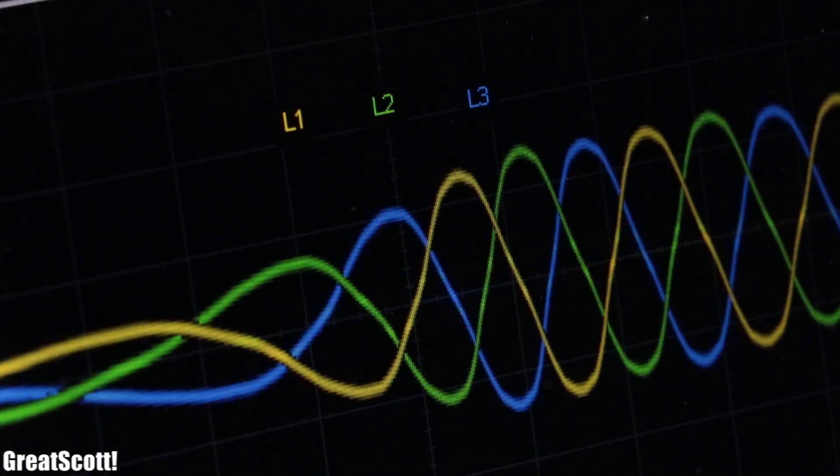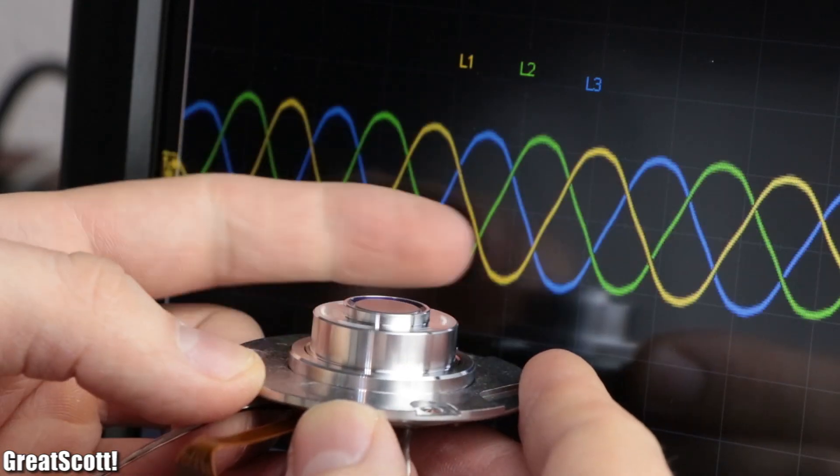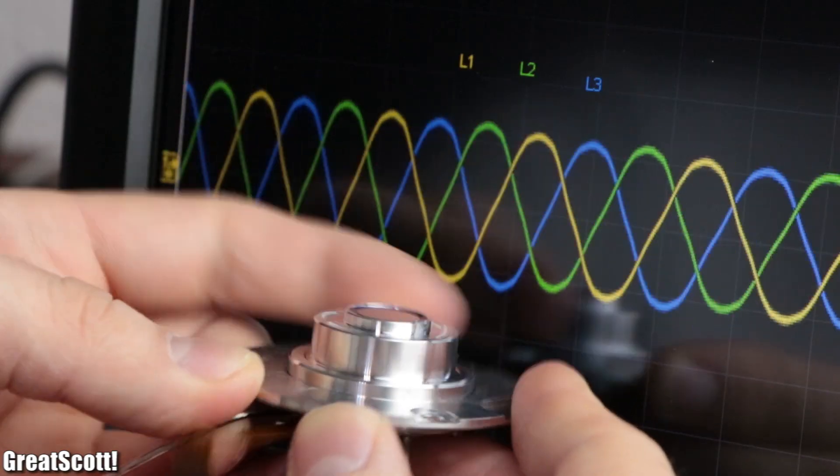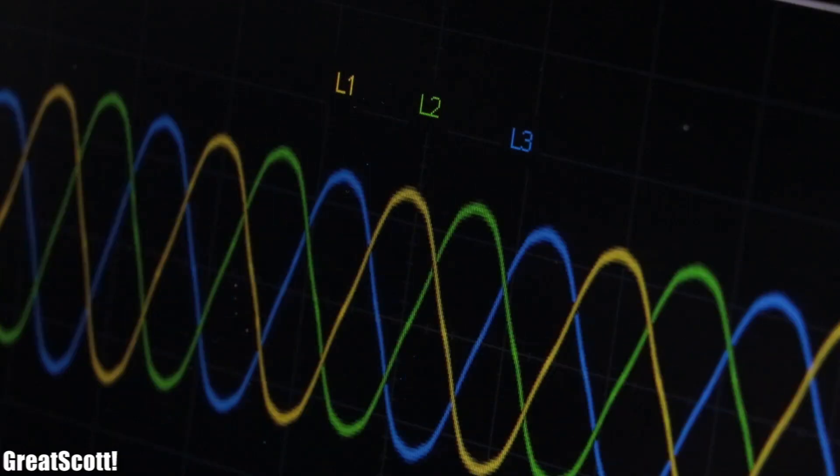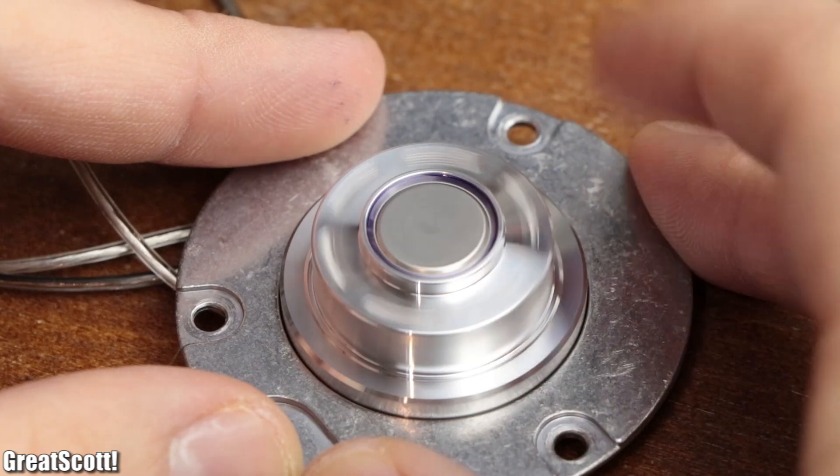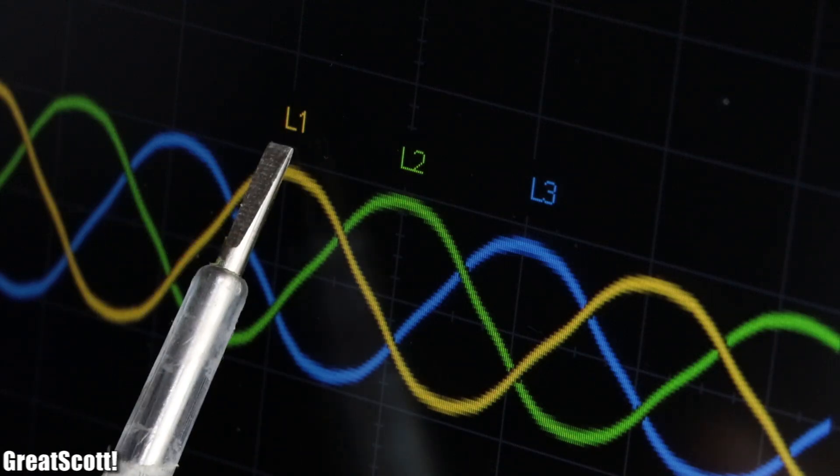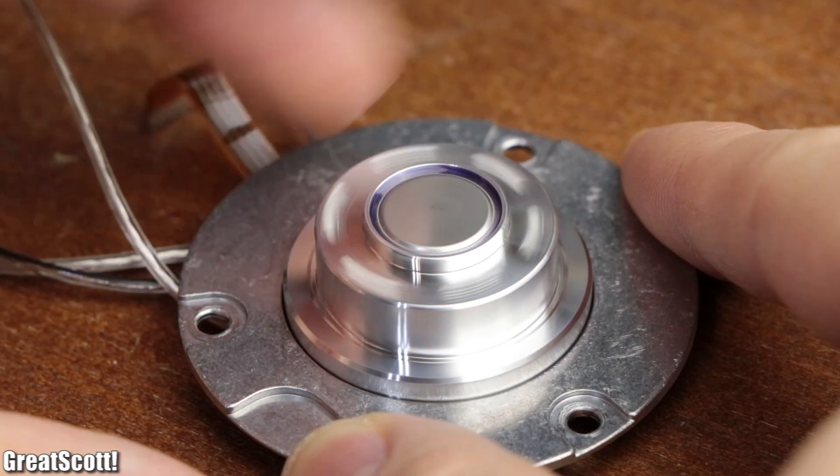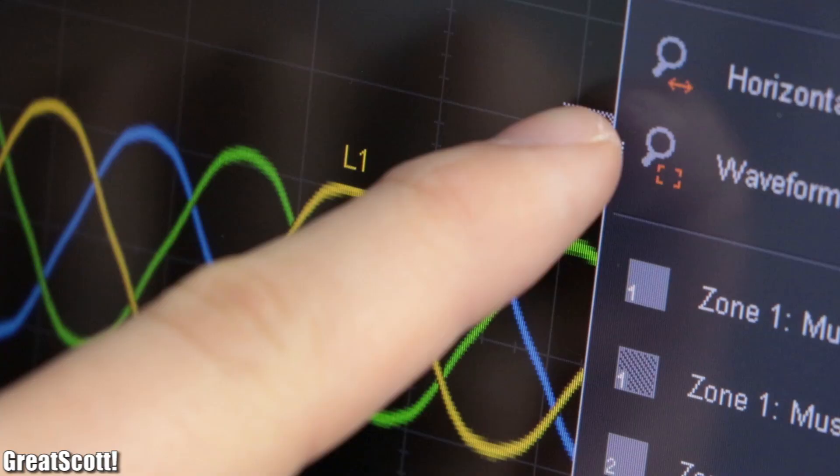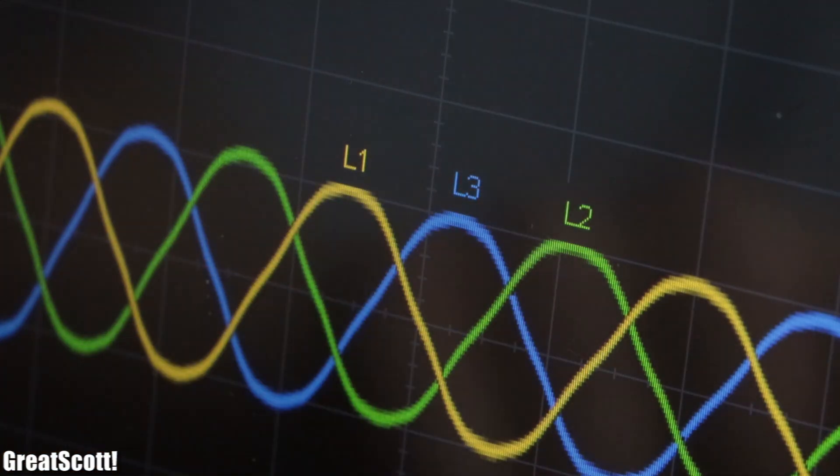As you can see by rotating the motor in either direction, a three-phase voltage is created whose amplitude and frequency is proportional to the rotation speed. If we have a closer look at the voltages during the clockwise rotation, we can see that the sequence is L1, L2, L3, while the sequence for the anti-clockwise rotation is L1, L3, L2.